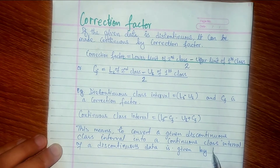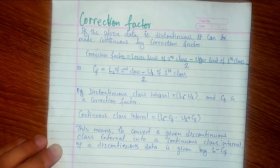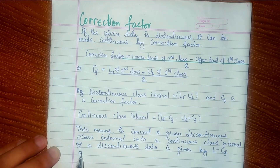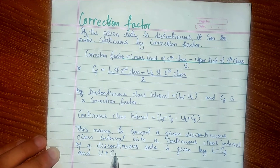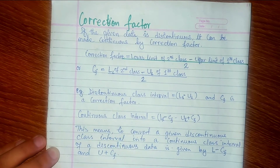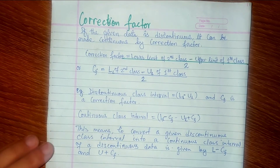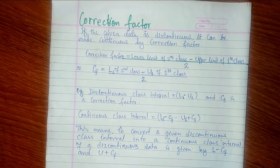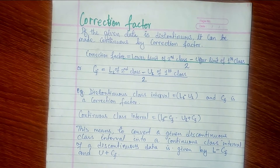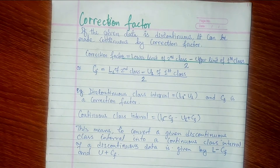So, lower limit minus correction factor and upper limit plus correction factor — this converts the discontinuous class interval into a continuous class interval, making the discontinuous data into continuous data.